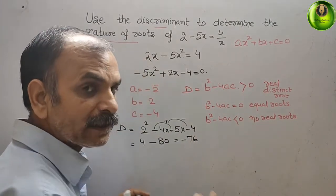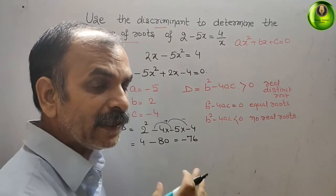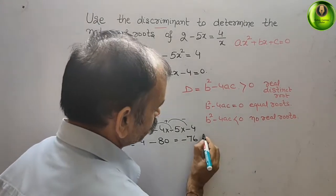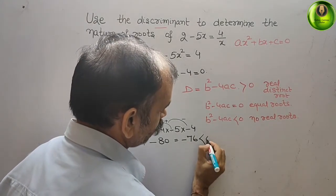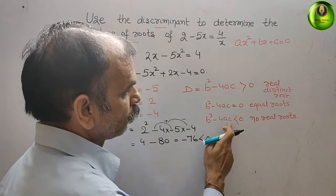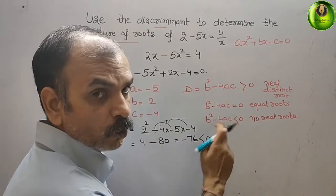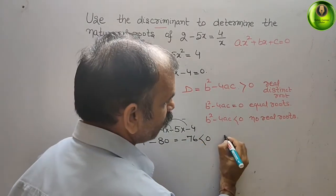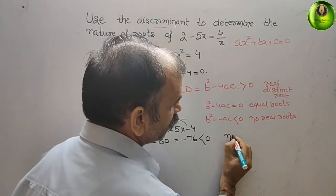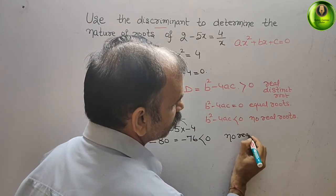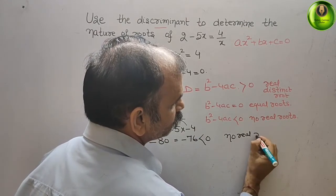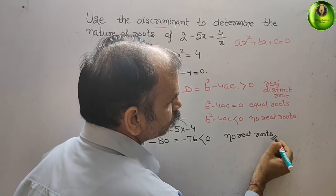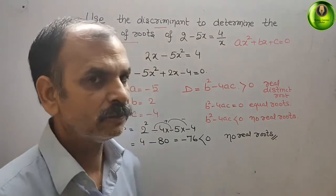We know that a negative sign means the discriminant is less than 0. Therefore, we get no real roots. The nature of roots is no real roots. This is your answer.